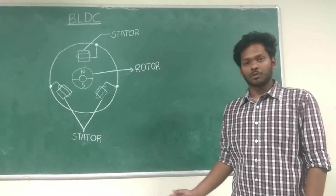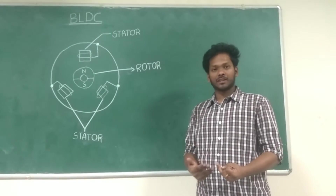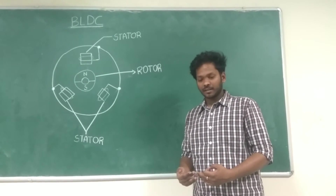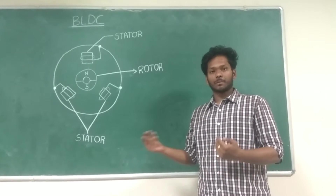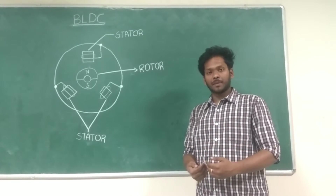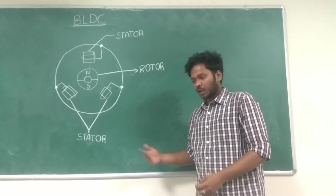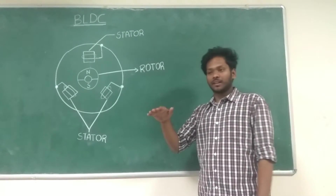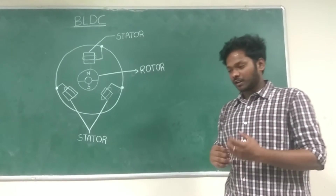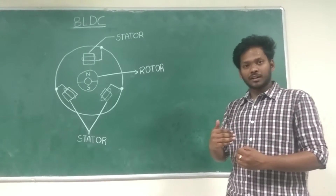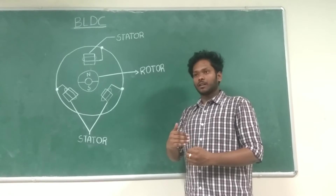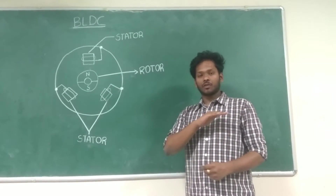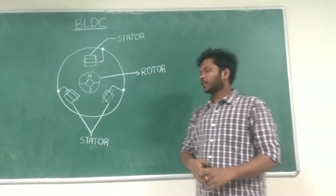BLDC stands for brushless DC motor. Unlike the other DC motors, your BLDC doesn't have brushes, due to which there is less maintenance. And compared to other motors, this BLDC gives a constant torque. Unlike in a series motor, you have very high torque in initial conditions, but it drops as RPM increases. But for your BLDC, you have a constant torque versus RPM graph.